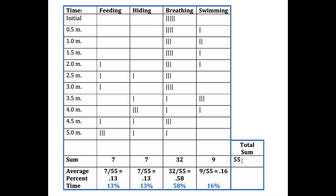That total helps me convert to percents. To find what percent time they were feeding: seven divided by 55 gives 13%. Same for hiding: seven divided by 55 gives 13%. For breathing: 32 divided by 55 gives 58%. Same idea for swimming. That's how you create the time budget.